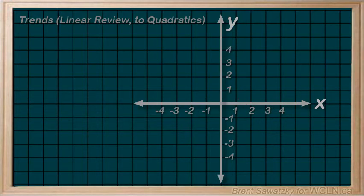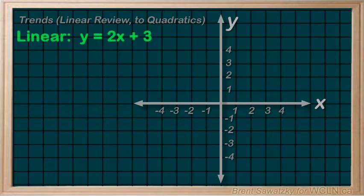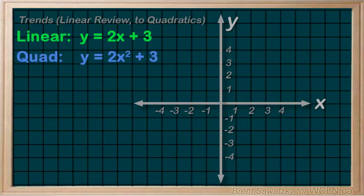After reviewing the general trends in linear graphs, that is degree 1, we're ready to consider similar trends in quadratic graphs, or degree 2. We'll note that quadratics are the focus of this unit. So let's go ahead and compare linear versus quadratic in some general ways.